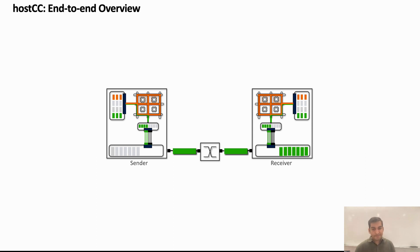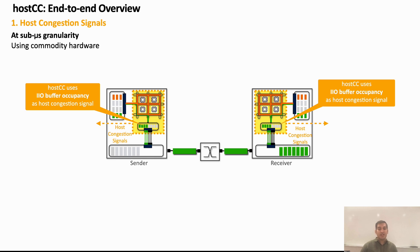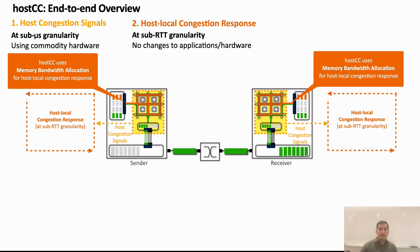I'll now provide an end-to-end overview of the Host CC architecture. First, in addition to congestion signals from within the network fabric, Host CC generates host congestion signals at the host interconnect at some microsecond timescales. These host congestion signals enable Host CC to precisely capture the time, location, and reason for host congestion. Specifically, Host CC uses IIO buffer occupancy as its congestion signal. IIO occupancy can be measured by reading a register typically available in commodity hardware, allowing Host CC to work without any hardware modifications or support. Host CC uses host local congestion signals to allocate host resources between network traffic and host local traffic. The current Host CC implementation employs Intel Memory Bandwidth Allocation, also referred to as MBA, to perform host resource allocation. MBA provides a simple multi-level back pressure mechanism to the host local traffic. Updating the resource allocation using MBA requires updating a single hardware register, which is also typically available on commodity hardware. This allows Host CC to perform its host local congestion response without any modifications to the applications and hardware.